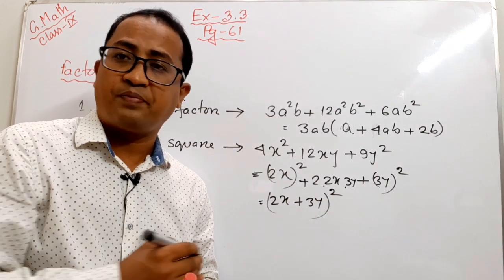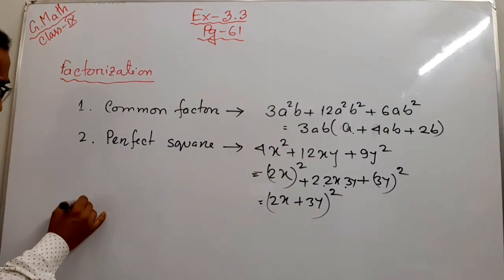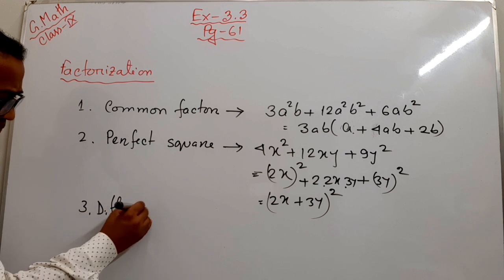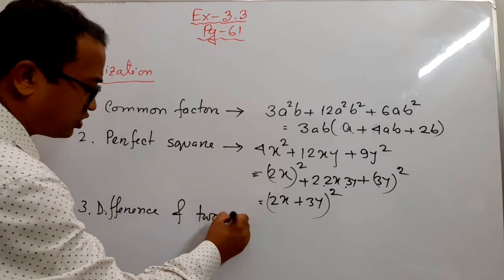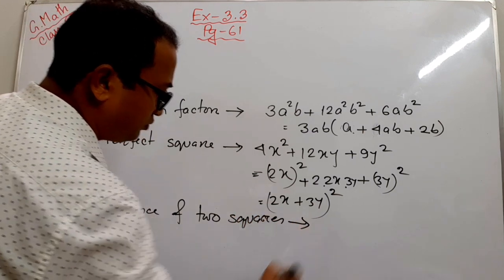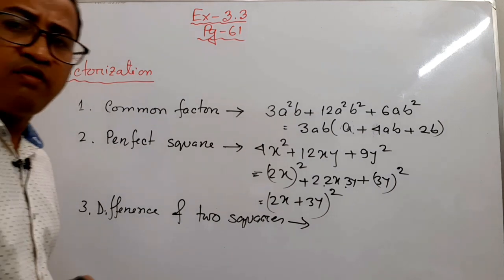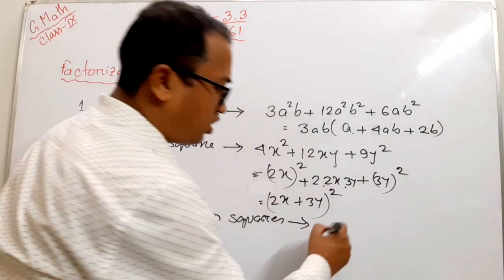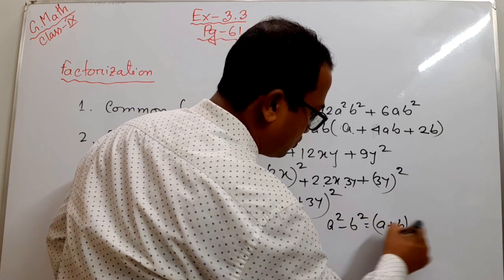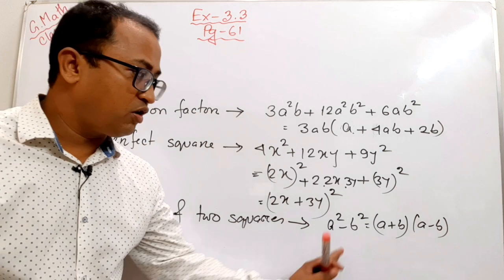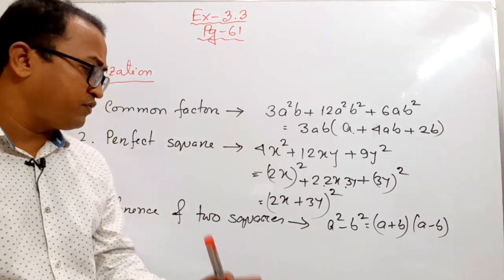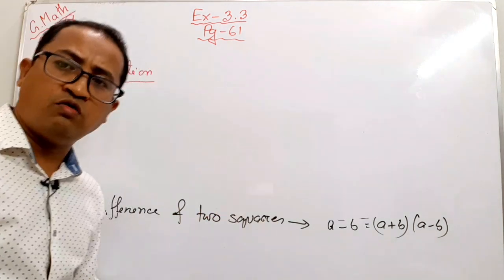If it cannot be converted into a perfect square, then we try to express it as the difference of two squares — rule number three. Here we apply the formula a² − b² = (a + b)(a − b). I think all of you understood how to convert an expression into the difference of two squares.